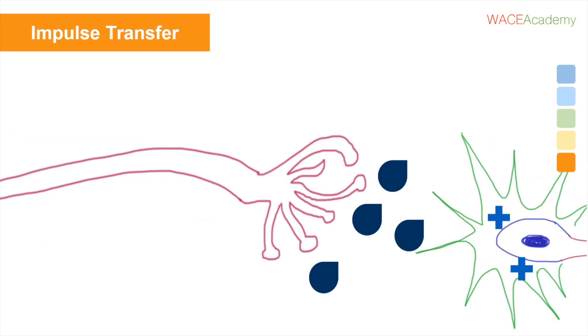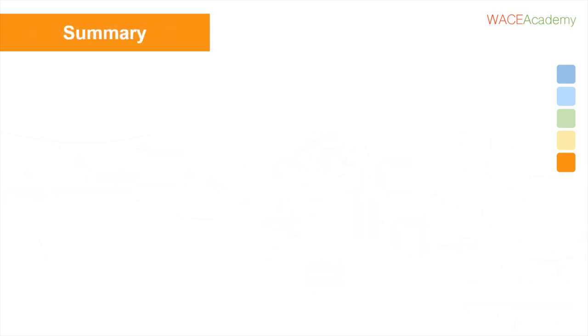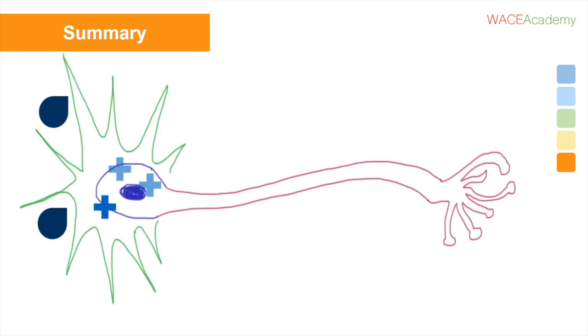Alright, that's it for our content for today. Today we covered nerve impulses, which are action potentials, differences between the charge of the inside and outside of a neuron that travel down the axon. Action potentials travel between neurons using neurotransmitters.